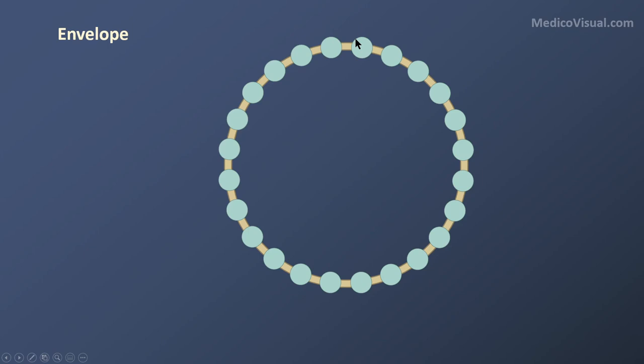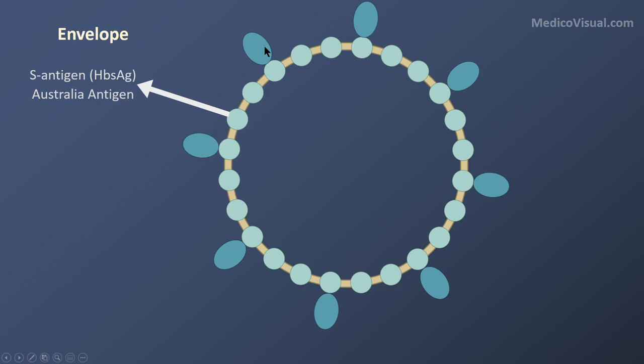The viral protein embedded into the envelope membrane is the surface antigen — called S antigen, surface antigen, or hepatitis B surface antigen (HBsAg). Previously it was called the Australia antigen. At some places, along with this S antigen, there are also extracellular proteins attached to it.